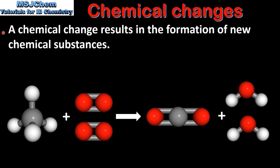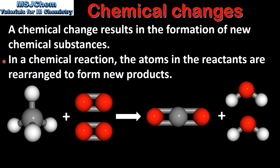Next we look at chemical changes. A chemical change results in the formation of new chemical substances. In a chemical reaction the atoms in the reactants are rearranged to form new products.